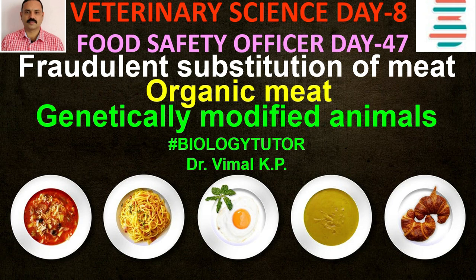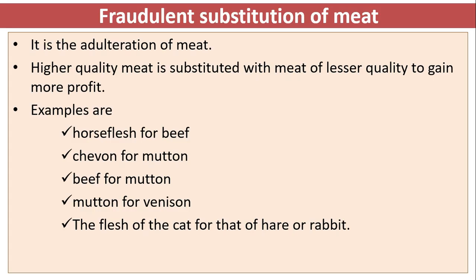Welcome to Biology Tutor. Today we are going to discuss fraudulent substitution of meat, organic meat, and genetically modified animals. Fraudulent substitution of meat is the adulteration of meat where higher quality meat is substituted with meat of lesser quality to gain more profit.